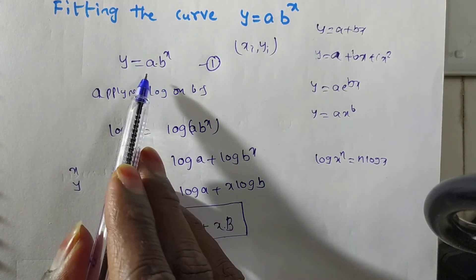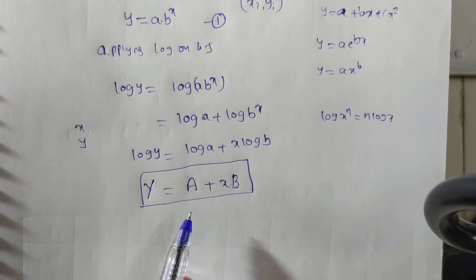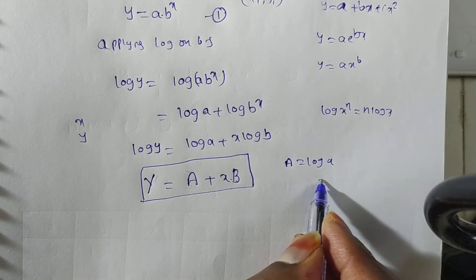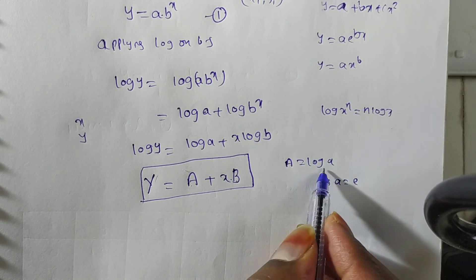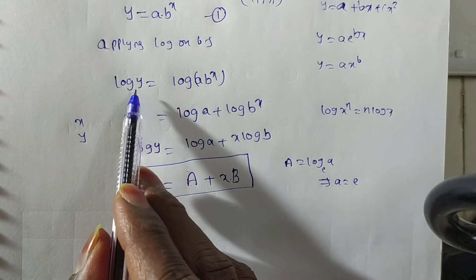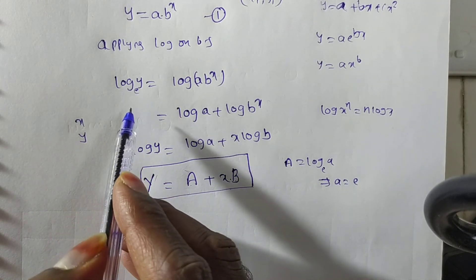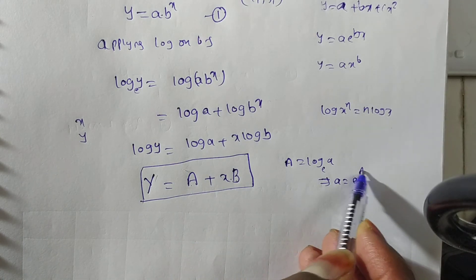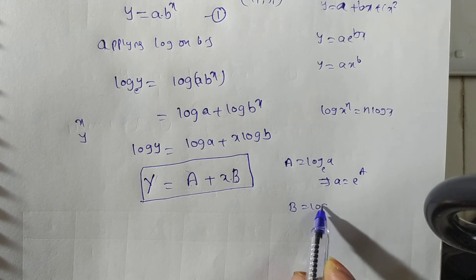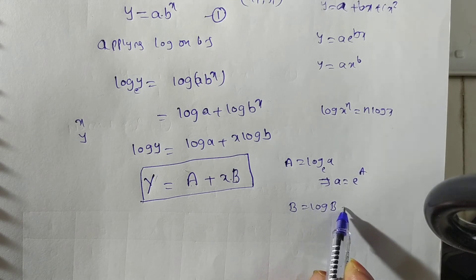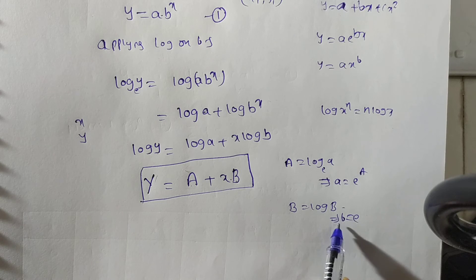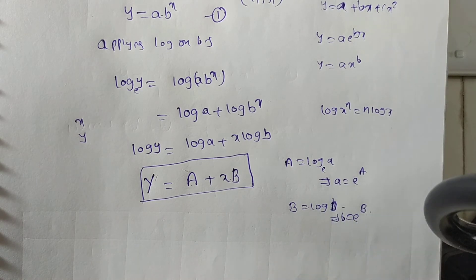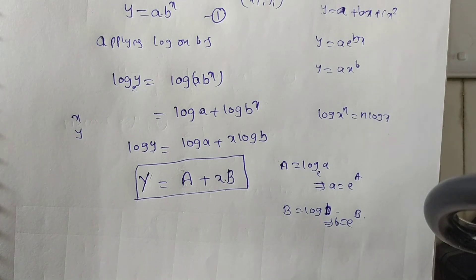We need small a and small b for the curve y = ab^x. Since capital A = log(small a), we get small a = antilog(A) = e^A. Similarly, capital B = log(small b), so small b = e^B. After solving the normal equations for capital A and capital B, we apply antilog to recover small a and small b.